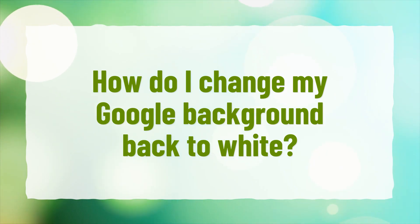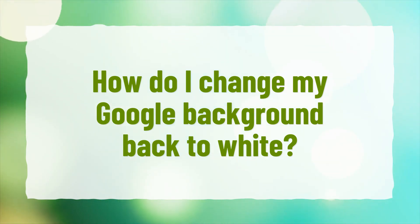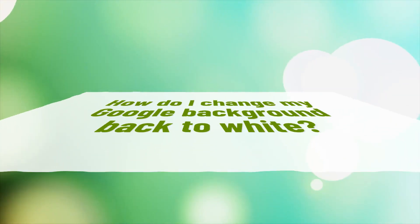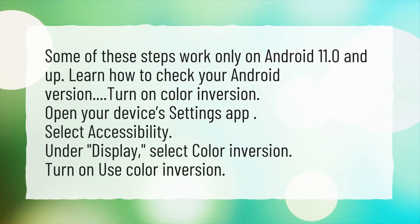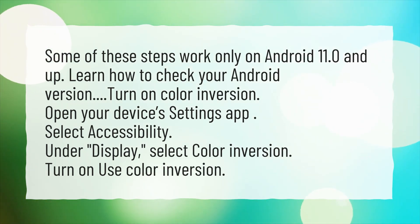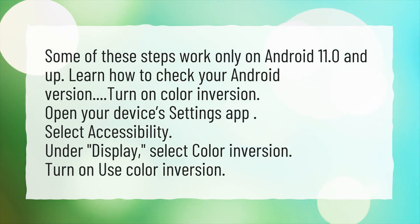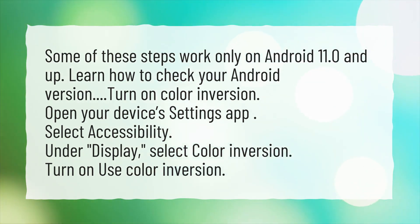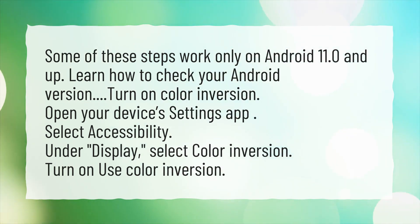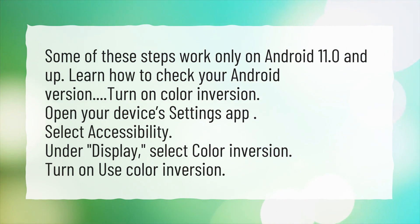How do I change my Google background back to white? Some of these steps work only on Android 11.0 and up. Learn how to check your Android version. Turn on Color Inversion: Open your device's Settings app, select Accessibility, and under Display, select Color Inversion. Turn on Use Color Inversion.